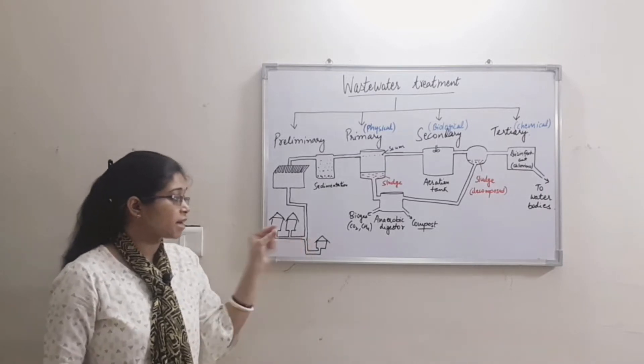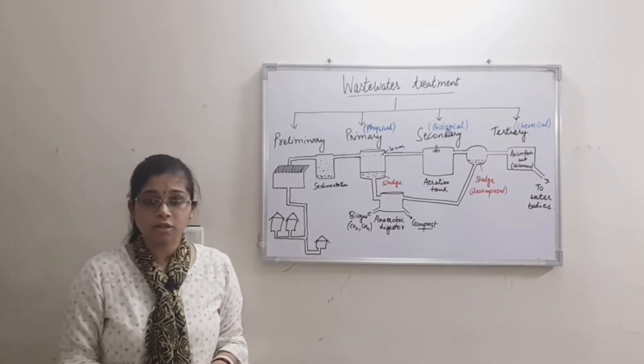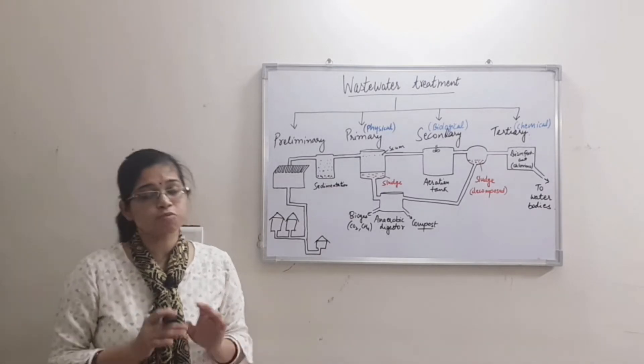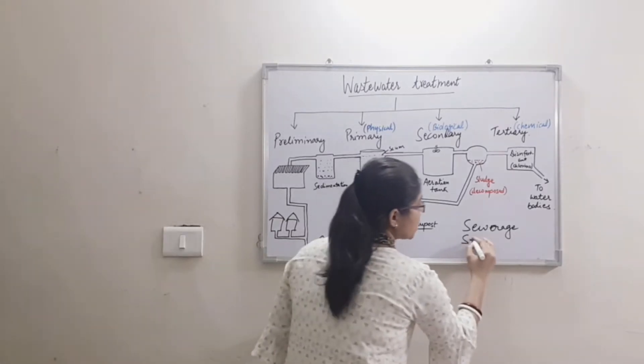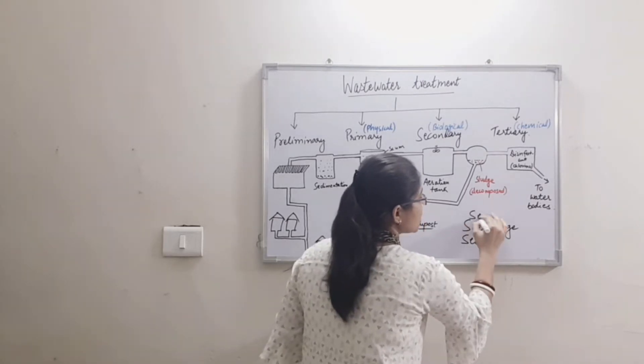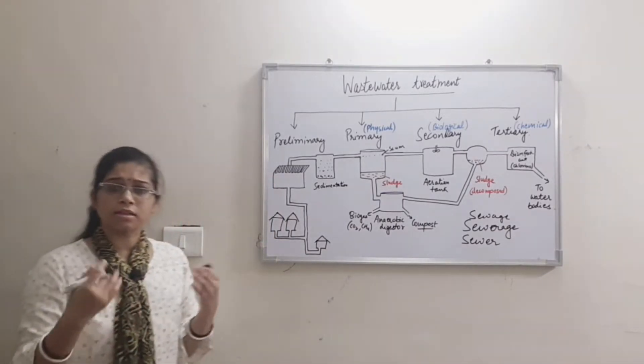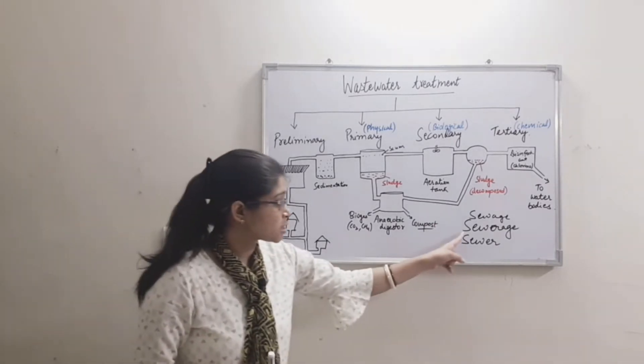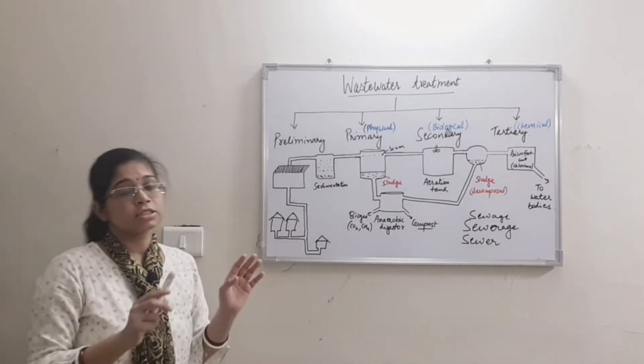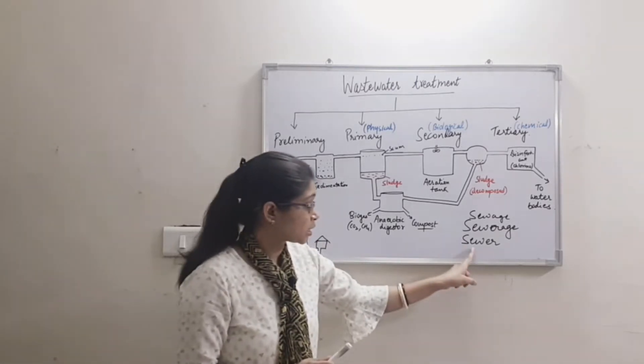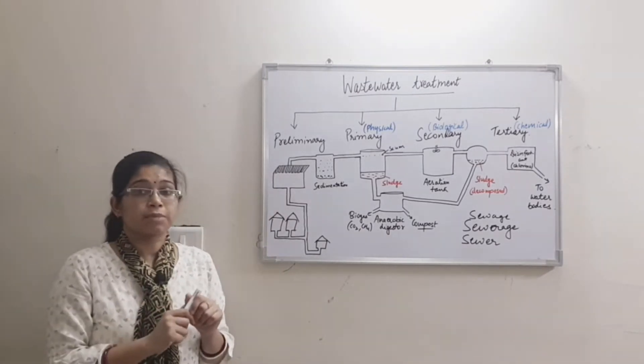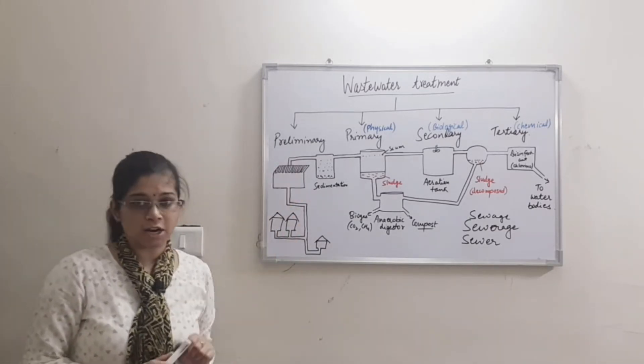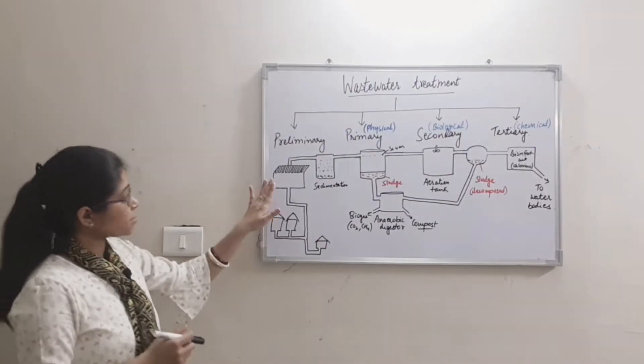This sewage goes through sewers to a main chamber where sewage from different houses combines. This sewage network is called sewerage, and the sewage travels through the sewerage and reaches the wastewater treatment plant.